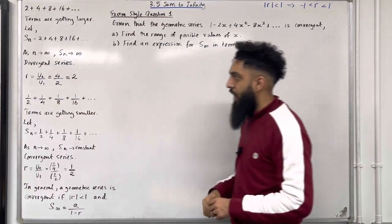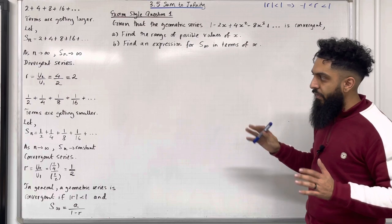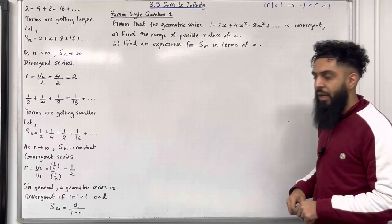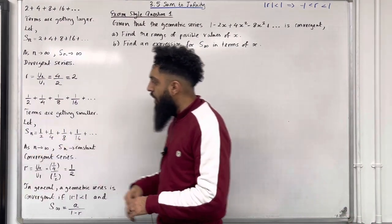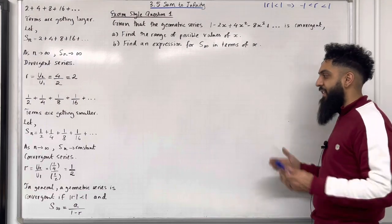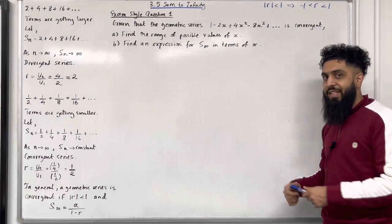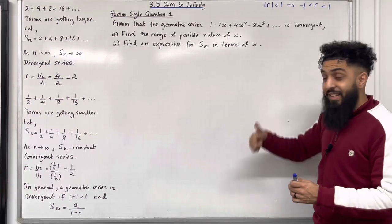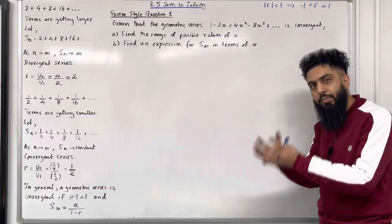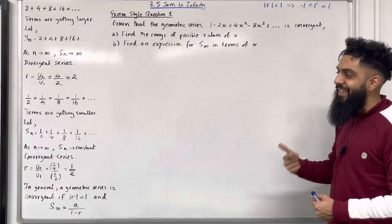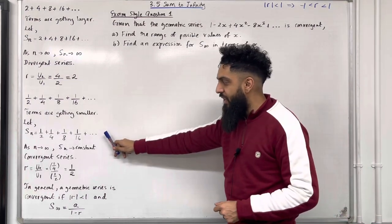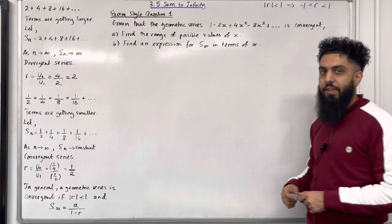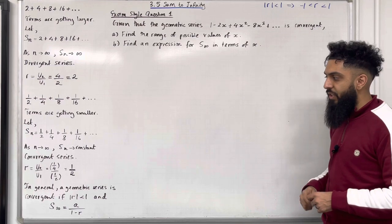Consider the following geometric series: 1/2 + 1/4 + 1/8 + 1/16 + ... In this case the terms are getting smaller. Let Sn, the sum of the first n terms, equal 1/2 + 1/4 + 1/8 + 1/16 + ... As n tends to infinity, Sn tends to a constant, because the terms are getting smaller. Hence the sum will tend to a constant as n tends to infinity. We call this a convergent series. The common ratio is 1/4 divided by 1/2, which is 1/2.